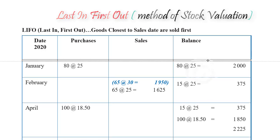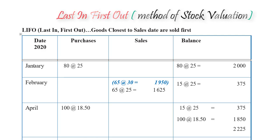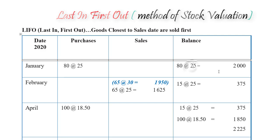This question starts with 80 units at $25 in January. Some questions may not have different months — it might just have different days within a month. So immediately we would put that 80 units at $25 in the balance column, because that's all the units we have on hand.